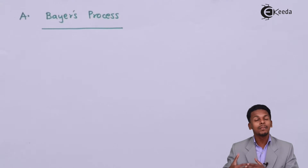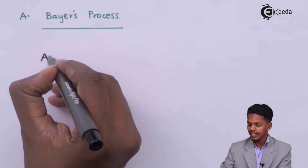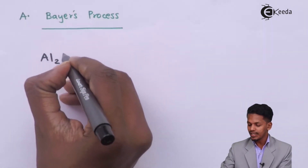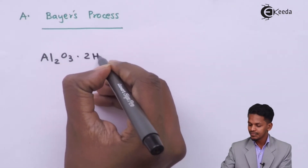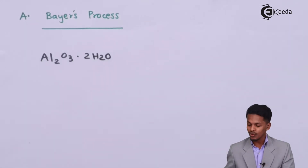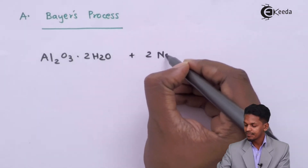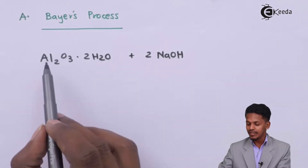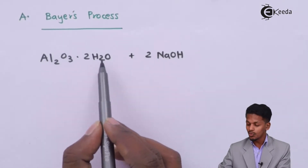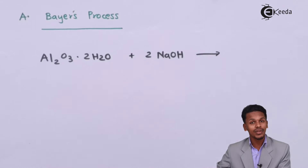By this method we can eliminate the impurity and obtain a particular ore which has a high quantity of metal. In Bayer's process, we treat bauxite — that is Al₂O₃ — in pulverized (crushed) form. This pulverized bauxite ore is treated with two moles of NaOH, and the reaction also involves two moles of H₂O along with the two moles of NaOH.